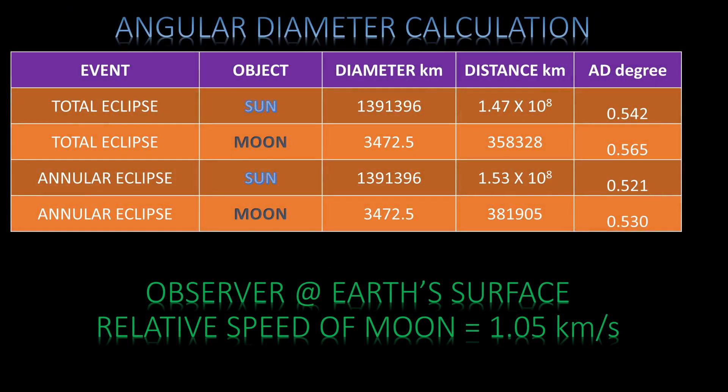We get the diameter and the distance of the sun and the moon to an observer on earth for various events like total eclipse or annular eclipse. The data is from the videos that I have shown. Here, the observer is on the earth's surface, so the earth's radius has to be subtracted from the distance before using it in the formula. From these data, we can calculate the angular diameter for the moon and the sun.